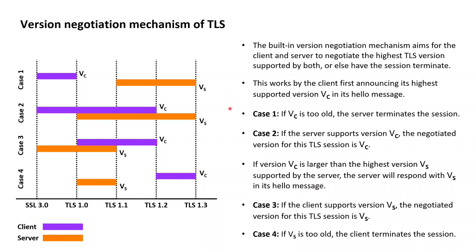The first case is the case where the client is simply too old, in the sense that all the TLS versions supported by the server are newer than the highest TLS version supported by the client. In that case, the server will raise an error alert, and with error alerts in TLS always being fatal, the connection will be closed by the server.